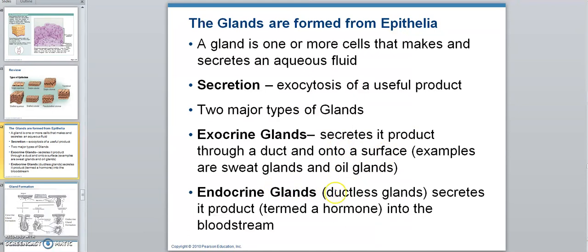An endocrine gland doesn't have a duct, so when it secretes its product, it leaks into the interstitial fluid and ultimately into the bloodstream and is carried long distances, like testosterone, insulin, and so forth. So the two major types of glands are exocrine and endocrine.